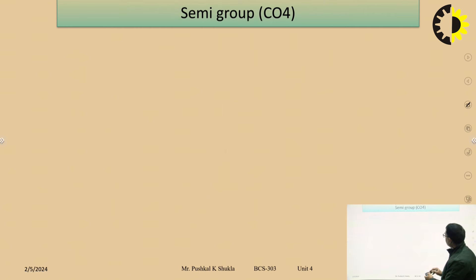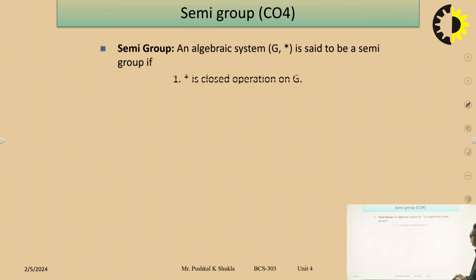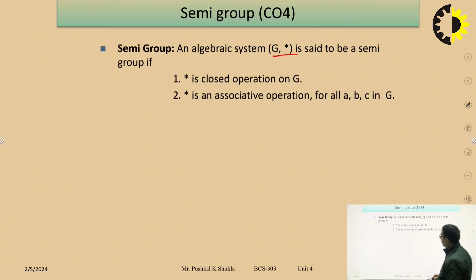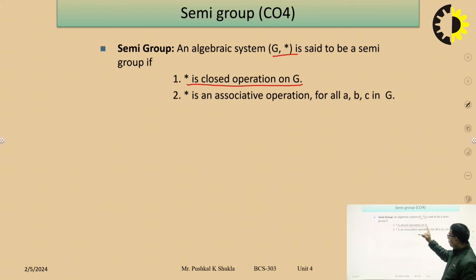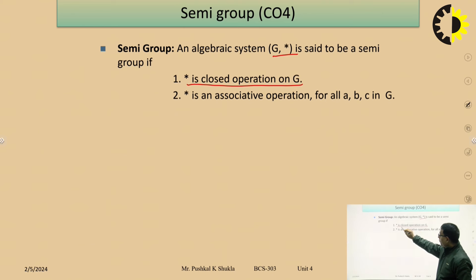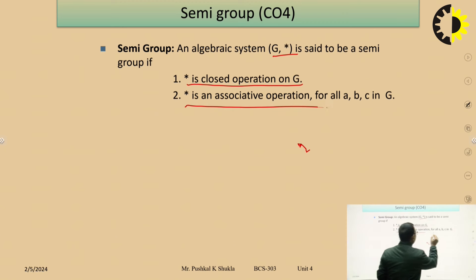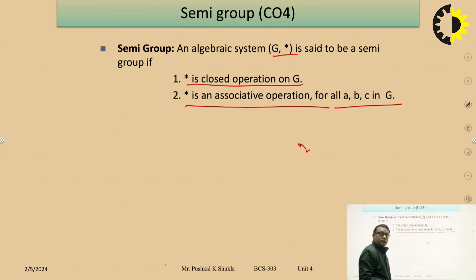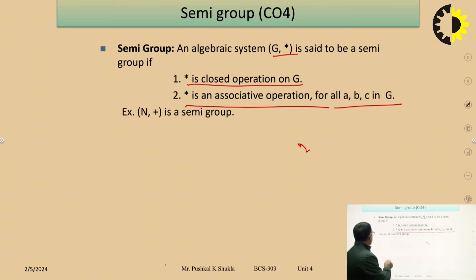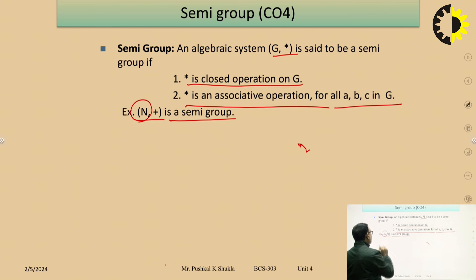Now let's come under semi-group. An algebraic system (G, star) is said to be a semi-group if star is a closed operation on G, and star is an associative operation for all a, b, c which are elements of G. For example, (N, +) is a semi-group, where N is the set of natural numbers and plus is the binary operation.